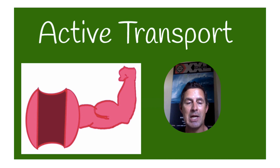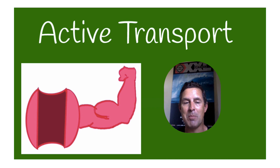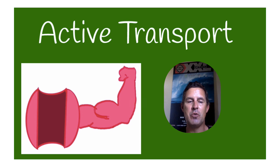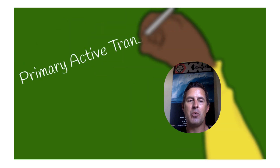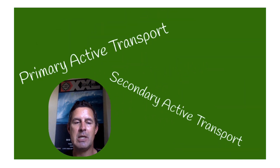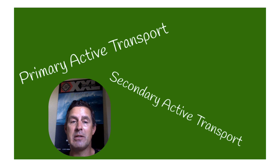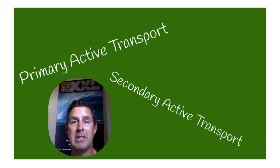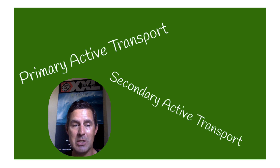Active transport is utilized to move things — ions or molecules — against their concentration gradients. There are two forms of active transport: primary active transport and secondary active transport. Primary active transport utilizes chemical energy in the form of ATP. Secondary active transport utilizes kinetic energy.